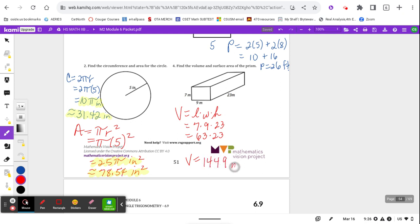1449 meters cubed. Then for surface area, I want you to imagine that there's a front and a back. So there's 2 of the 7 times 9s. Then there's a right and a left side. So there's 2 times the 23 times 7. And then there's 2 of the top and the bottom, which is 23 times 9.